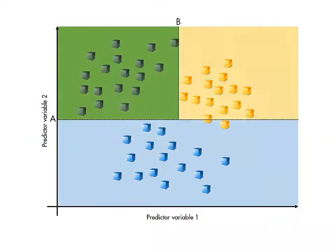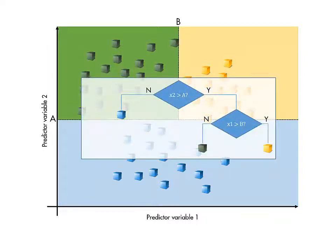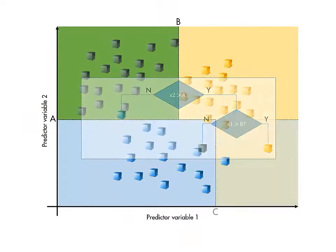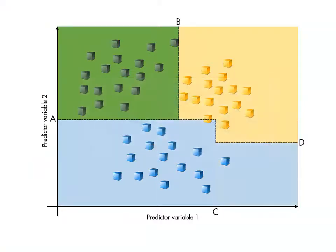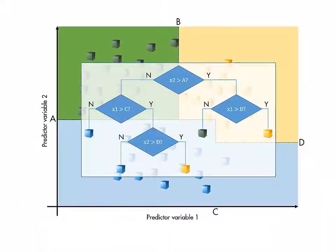Then the process repeats at the next level of the tree. This continues until all the branches terminate, which happens when no further splits on that branch can improve the criterion value.